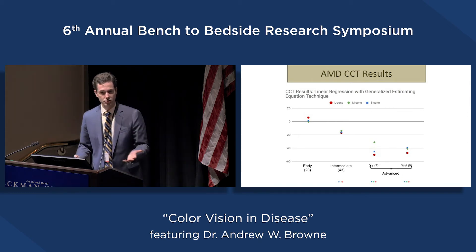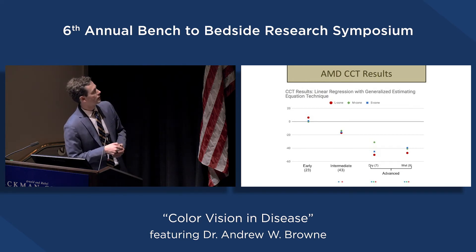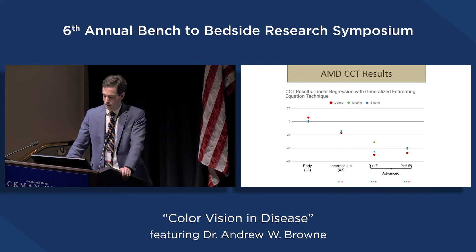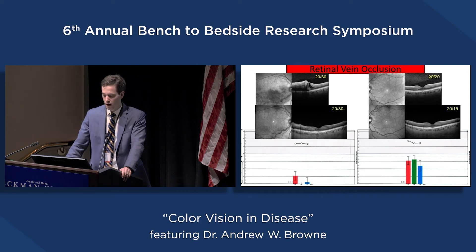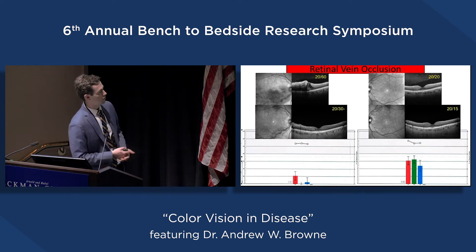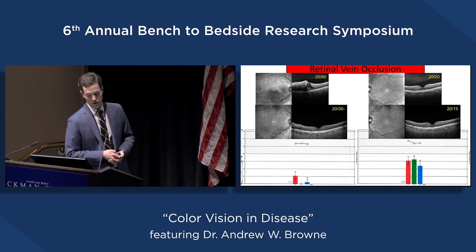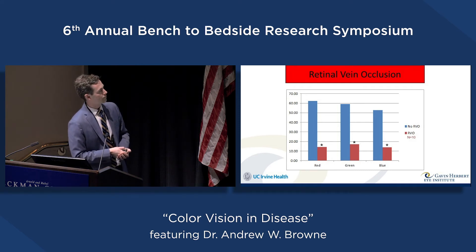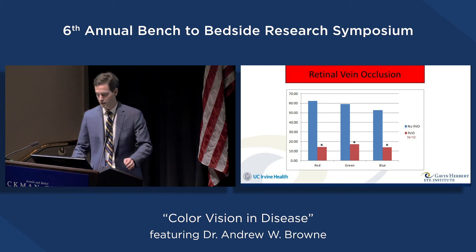Retinal vein occlusion is a vascular disease — essentially a stroke of the eye — where you might have hemorrhages within the retina, decreased blood flow, and on OCT extensive retinal swelling with a decline in visual acuity. Here's a patient who presented at 20/60, 20/20 in the other eye. After treatment normalizing the anatomy, they reached 20/30, while the fellow eye remained 20/15. Despite being 20/30, they had very low color vision sensitivity, whereas their fellow eye was closer to normal. Looking at 10 humans with decreased vision in one eye compared to their fellow eye: in all cone classes there was a statistically significant decline in the vein occlusion eye.